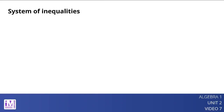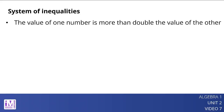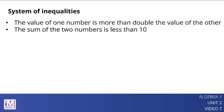Here is an example. Suppose there are two numbers, x and y, and there are two things we know about them. The value of one number is more than double the value of the other, and the sum of the two numbers is less than 10. We can represent these constraints with a system of inequalities: y is greater than 2x, and x plus y is less than 10.